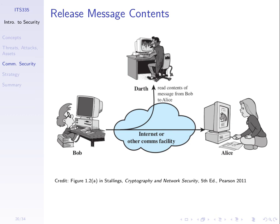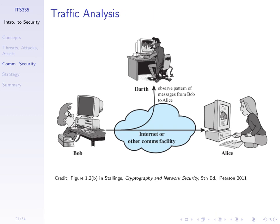How do we stop release of message contents? Bob encrypts his message. When you use HTTPS, your web browser encrypts data before sending it to the web server — so even if someone intercepts on an access point, they only see the encrypted form and need the key to decrypt it. If set up correctly, they should not be able to find the key. Encryption is a key technique for preventing this attack. But if we do encrypt, there may still be another attack possible: traffic analysis.